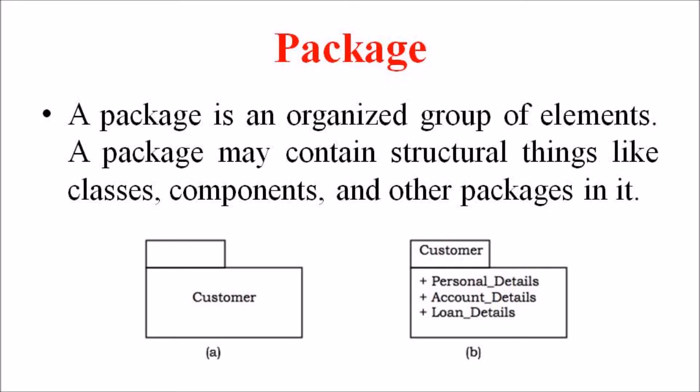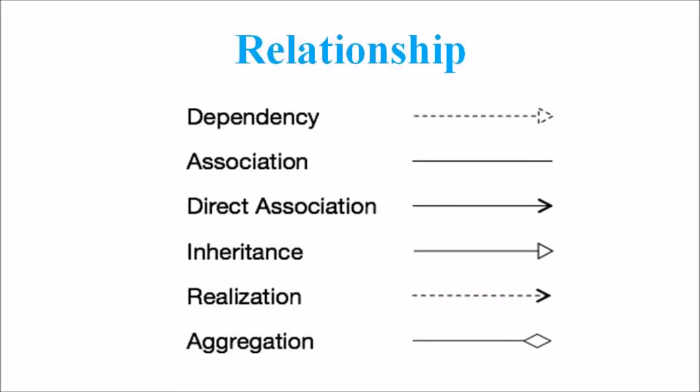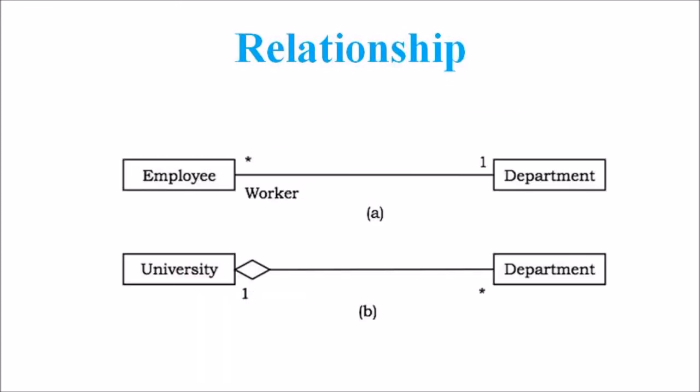The next term to be discussed is relationship. A notation for different types of relationships is shown in this figure. Usually, the elements in a relationship play a specific role, and a role name signifies the behavior of an element participating in a certain context. The relationships used in UML diagrams include dependency, association, direct association, inheritance, realization, and aggregation, and each of these has an independent type of notation. This figure shows an example of different relationships between classes.